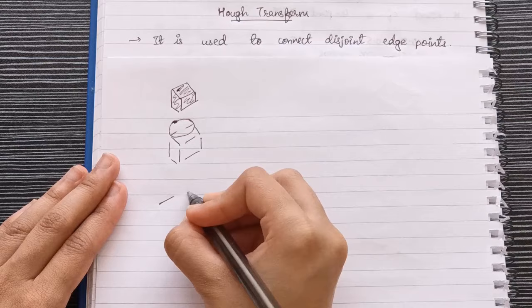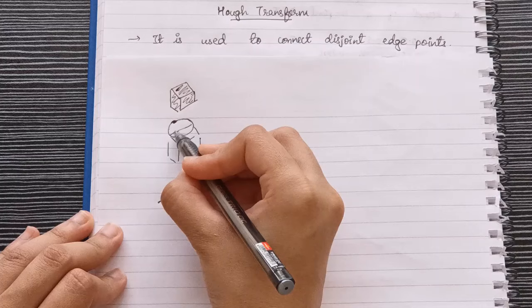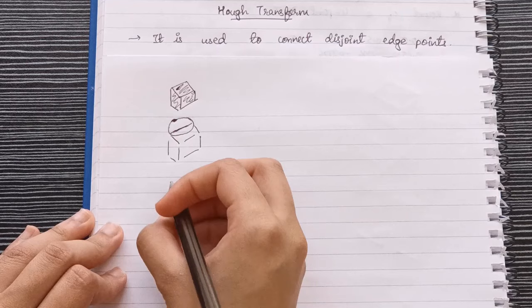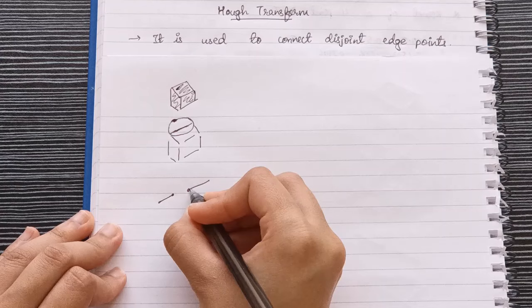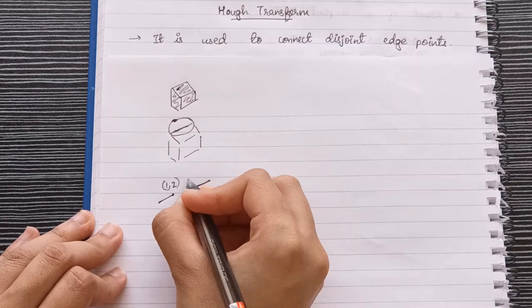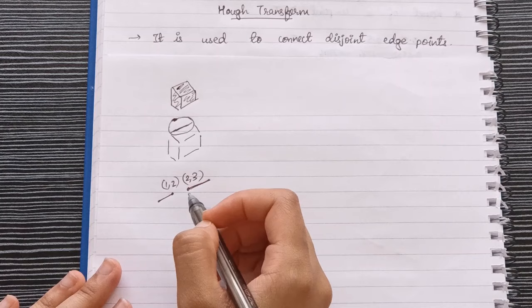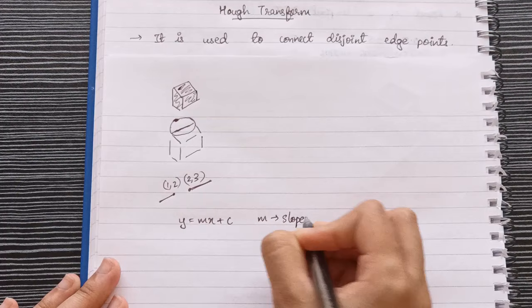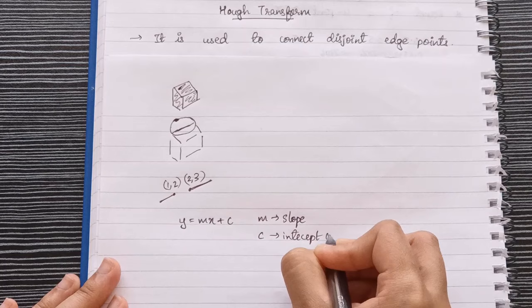We want to fill the gap between disjoint edges, but how do we ask a computer to fill it up? As humans we can do it, but for computers it's difficult. Suppose we have two points — 1 comma 2 and 2 comma 3. If you remember, the equation of a line is y equal to mx plus c, where m is the slope and c is the intercept.